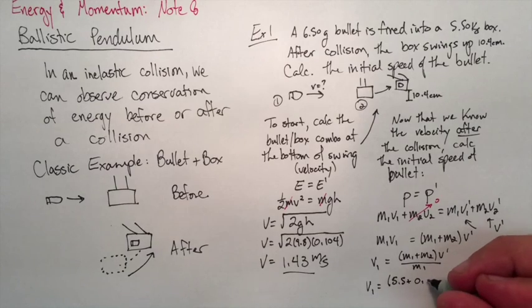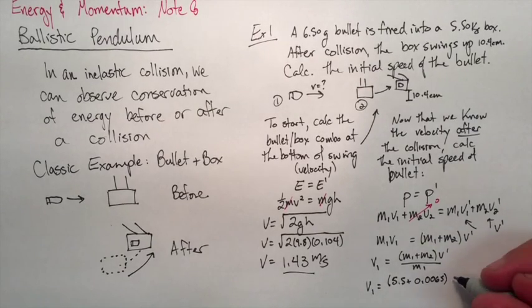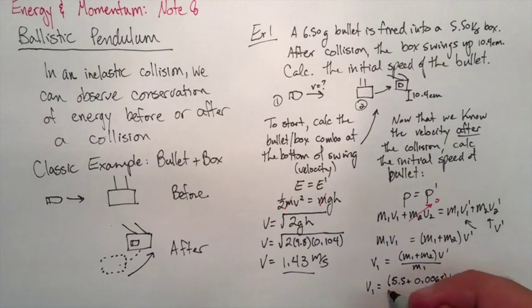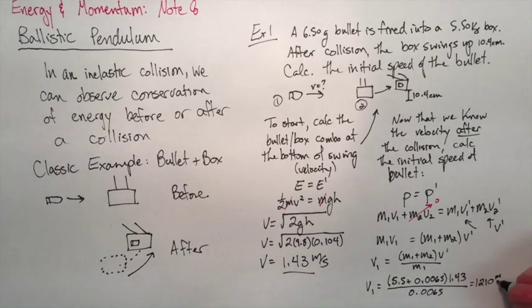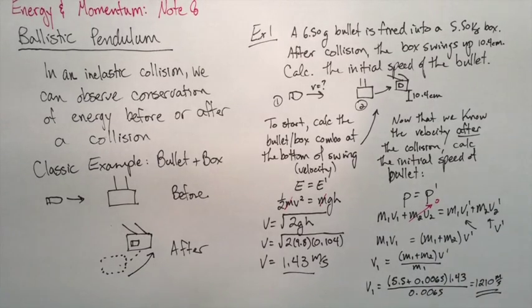We make our rearrangement, put in our values with the appropriate conversions. Using our value from before, we find the final velocity of the bullet to be 1,210 meters per second, which seems about right for a bullet.